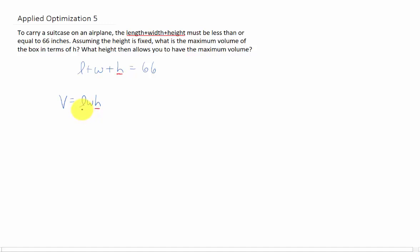And while you'll learn how to maximize functions of more than one variable in Calculus 3, for Calculus 1 we need one variable in these problems. So what we need to do is eliminate one variable by solving for a variable. So let's say l equals 66 minus w minus h.